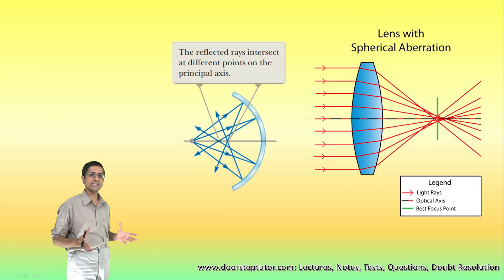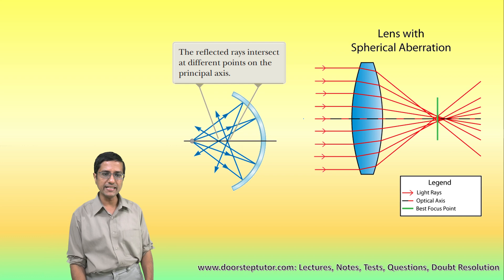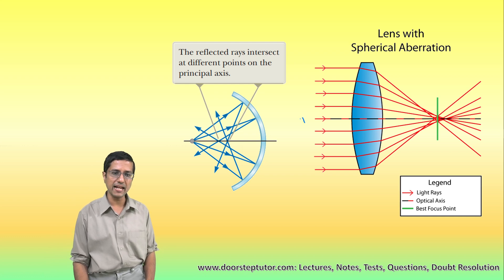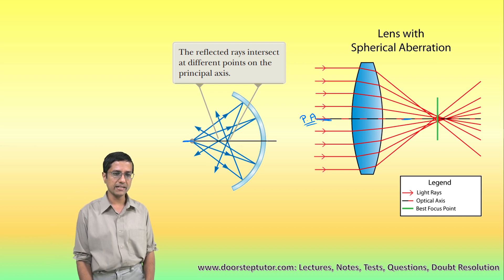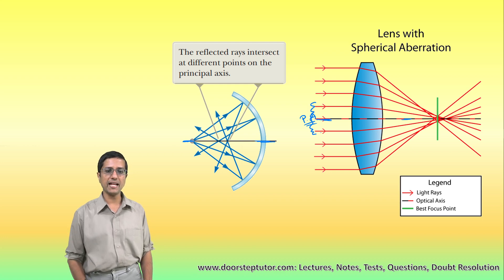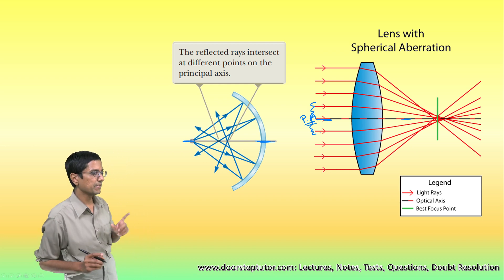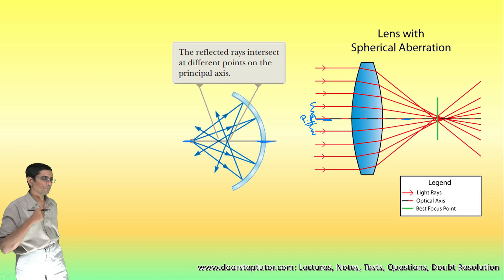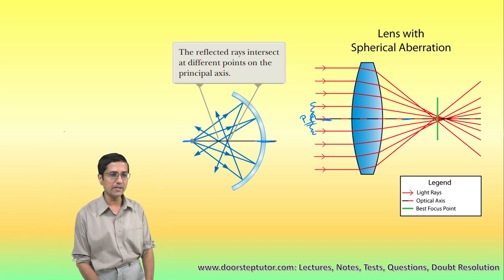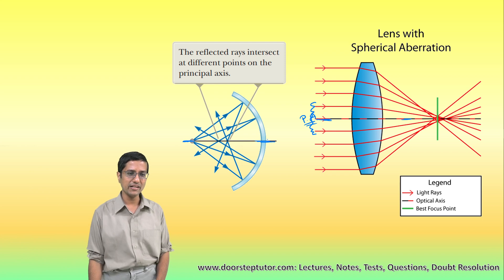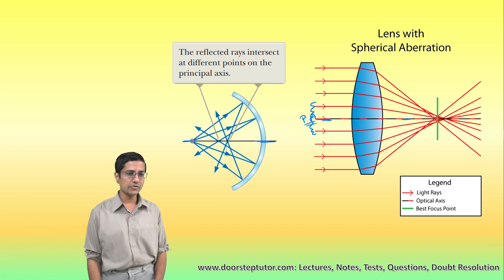As the name itself suggests, this is the principal axis of our ray tracing diagram. The rays which are near this principal axis — 'para' means near — so para-axial means the rays which are near this principal axis, near the axis. These are the para-axial rays.